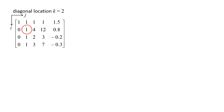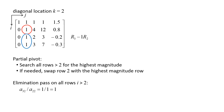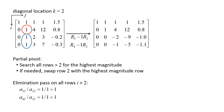Now we move to the second diagonal location and k increases to 2. The value of this diagonal element is 1. We check if partial pivoting is necessary by searching all values below the diagonal — there is no higher magnitude value than 1 in rows 3 and 4, so pivoting is not necessary. Next we perform an elimination pass on all rows greater than 2. The factor for the third row is A32 divided by A22, which is 1/1 = 1, so we subtract 1 times row 2 from row 3. The factor for the fourth row is also 1/1 = 1, so we subtract 1 times row 2 from row 4. We now have a new augmented matrix with zeros below the second diagonal element.